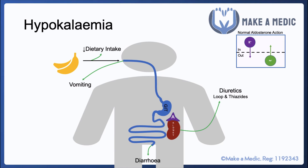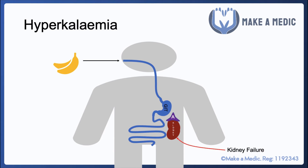The adrenal glands produce aldosterone, which is a very important hormone in maintaining blood pressure and salt concentrations. The normal action of aldosterone is to promote sodium retention and potassium excretion in the kidneys by acting on mineralocorticoid receptors. Hyperadrenalism, where there is excess production of hormones from the adrenal gland, can result in hypokalemia. Conn's syndrome involves an adrenal adenoma producing excess aldosterone, and Cushing's involves high levels of cortisol, which at high concentrations can also act upon mineralocorticoid receptors, producing effects similar to high aldosterone — so both conditions can result in hypokalemia.